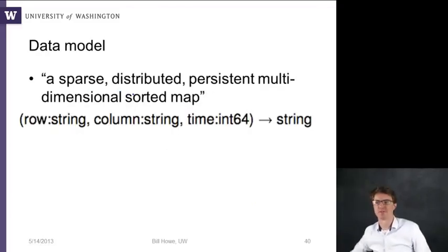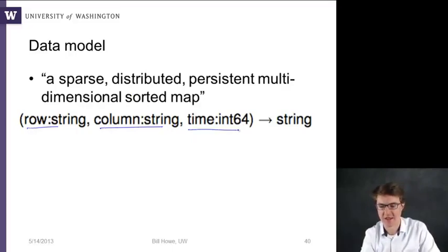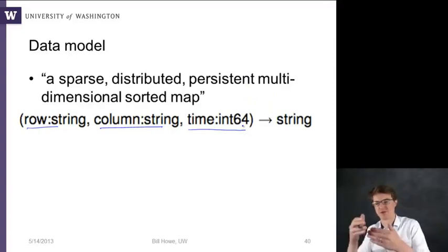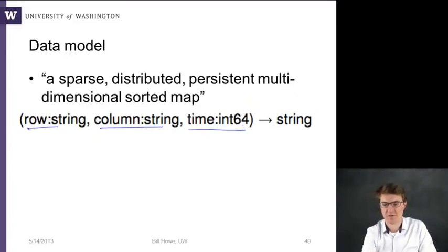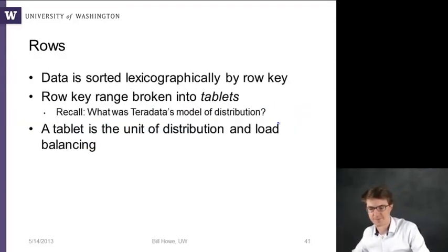So the data model here is a sparse, distributed, persistent, multi-dimensional sorted map. And what they mean here is that you can basically access any cell in a BigTable by giving a row ID, a column name, and a timestamp. The timestamp isn't really described in this English description here. It's for versioning. So after you have updates, you'll keep track of past versions of the same cell. And so if you provide these three parameters, BigTable will return you a string quickly.